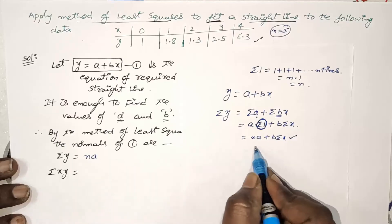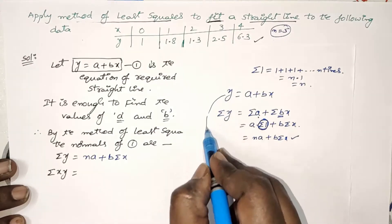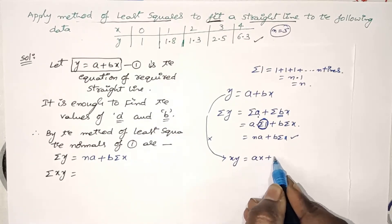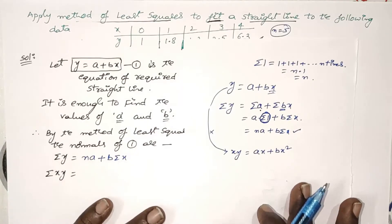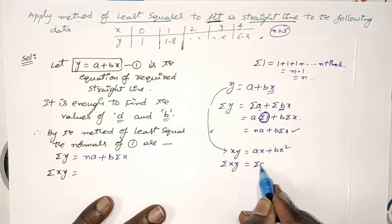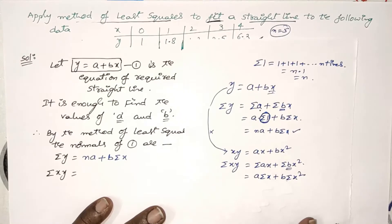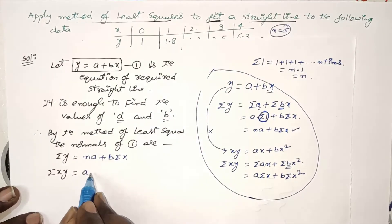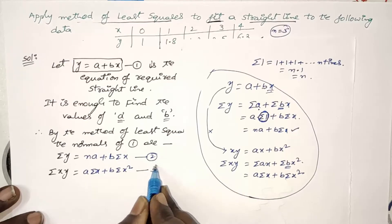So the first normal is: σy = na + b·σx. Now multiply the straight line by x, giving xy = ax + bx². Apply summation on both sides: σxy = a·σx + b·σx². Since a and b are constants, write a·σx + b·σx². This is the second normal: σxy = a·σx + b·σx². Take equation 2 and equation 3 respectively.